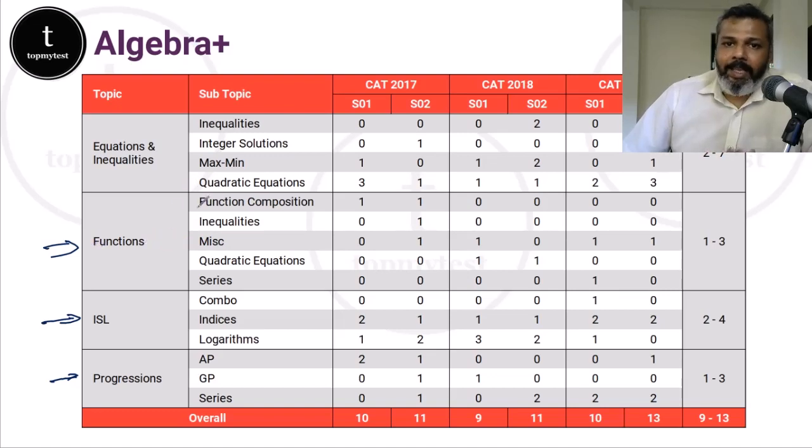In fact, the only thing in functions which can be technically classified as modern mathematics will basically be the function composition, the function of a function. Or all those miscellaneous things where you input the value of one function into the other and all those things which come up in the functions part. Usually, there is only one question in each slot which can be classified as purely modern maths.